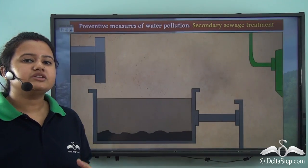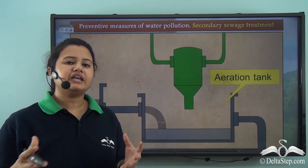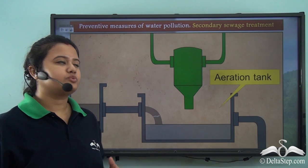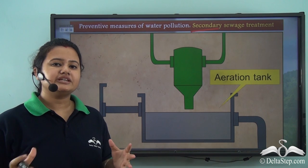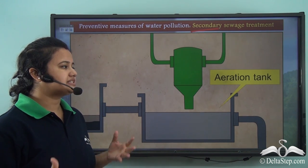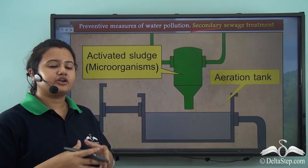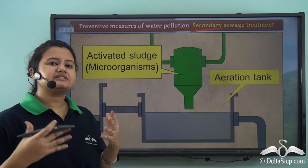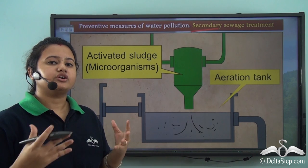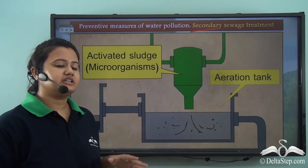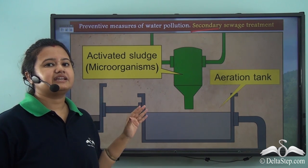The primary sewage treatment is followed by the secondary phase. The main aim of secondary sewage treatment is to reduce the biological content of the wastewater. For this purpose, the wastewater is held in an aeration tank, where activated sludge rich in microorganisms is released. These microorganisms act on the wastewater and decompose the organic matter present in it.